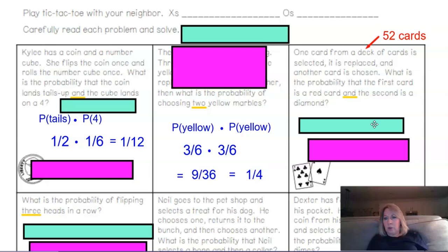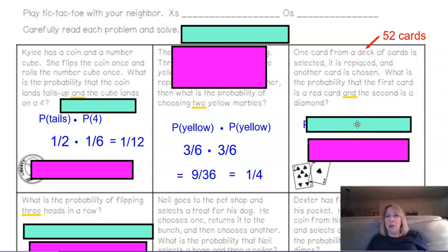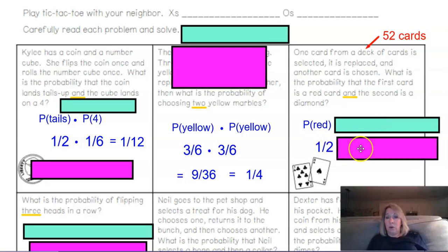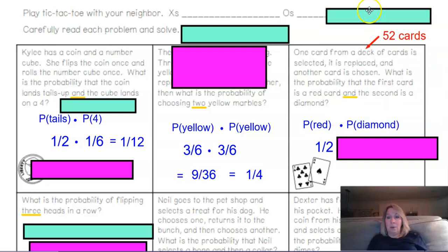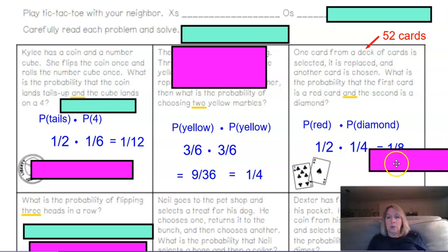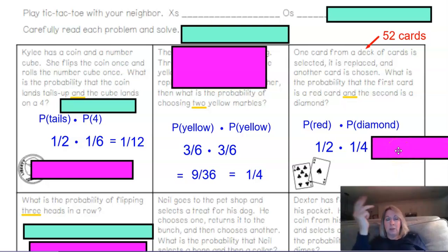What's the probability the first card is red and the second is a diamond? We said half the cards are red — all hearts and all diamonds make 26 out of 52. The probability of red is 1/2. We want to multiply the probabilities, and the probability of getting a diamond is 1/4 of the deck. So 1/2 times 1/4 is 1/8.